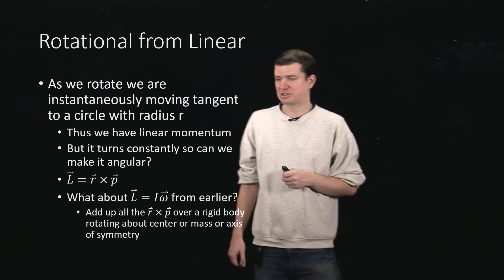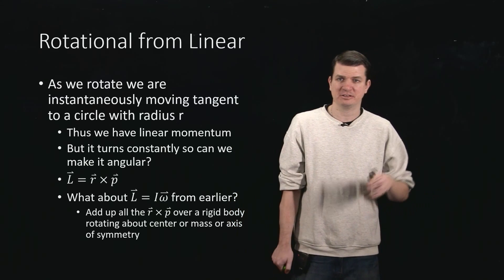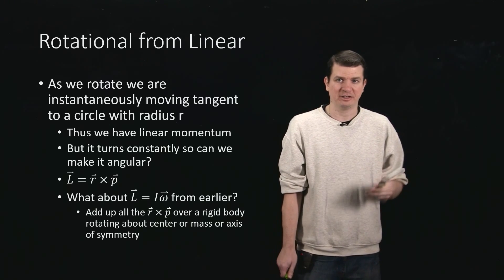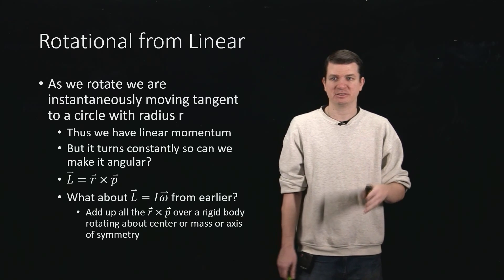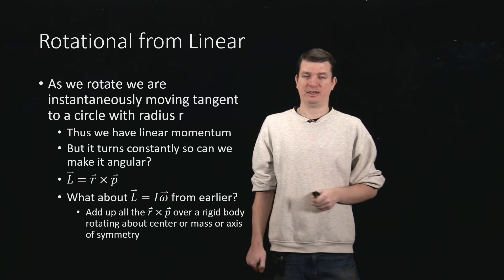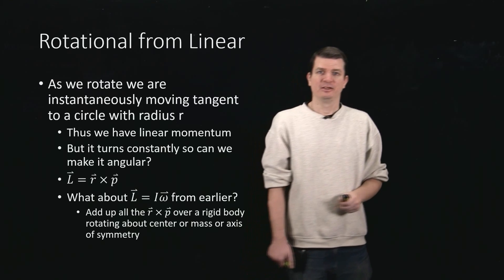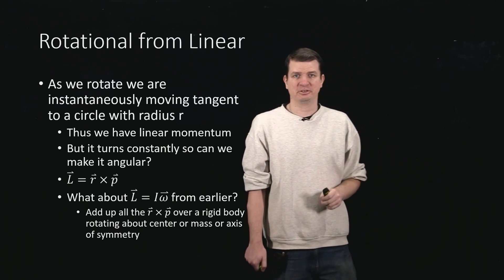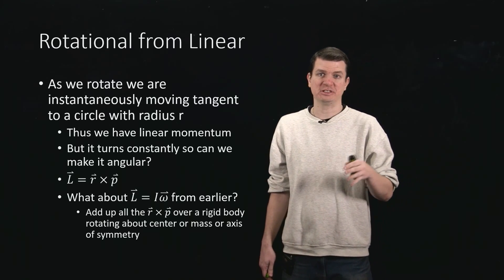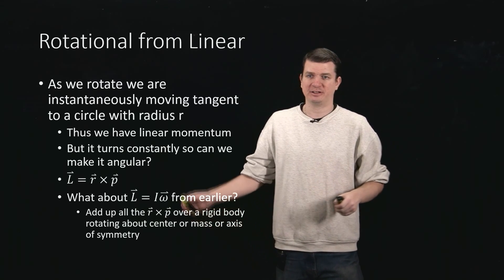This raises an interesting question, because in the earlier mapping we said you could map equations under certain rules. If you take the original P equals MV equation and apply the mapping rules — where P goes to L, M turns into I, and V turns into omega — then you should get L equals I omega. That's clearly not what we've written. But this is not a problem. Much like in the torque video, there are actually several ways of finding the torque: torque is I alpha, that's what it does, and you compute it as R cross F. So this shouldn't be too surprising, but you might wonder — are these two consistent?